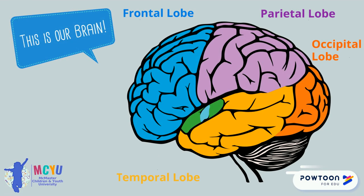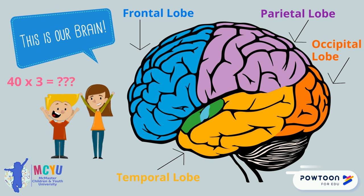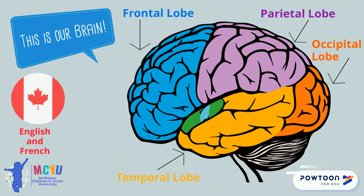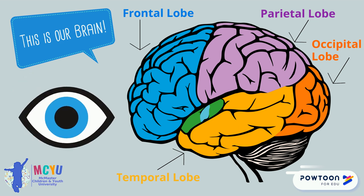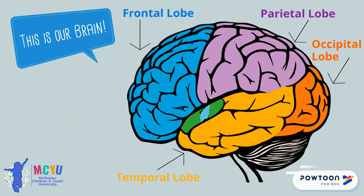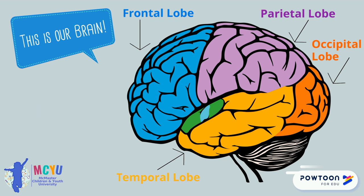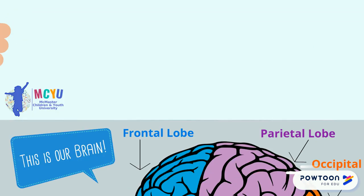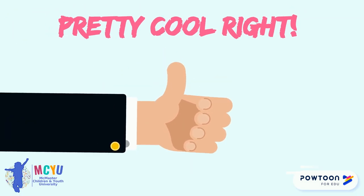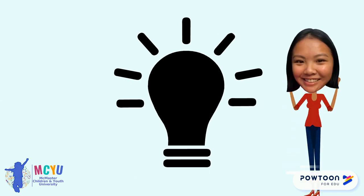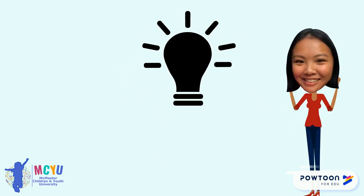The frontal lobe is the part of the brain that controls our problem solving, behavior, and our movement. The parietal lobe is responsible for language, the occipital lobe is used for vision, and finally the temporal lobe controls our hearing and feeling. This is also where the hippocampus is — the part of the brain that oversees memory. Pretty cool, right? Our memory is already amazing, but how can we make it even better?